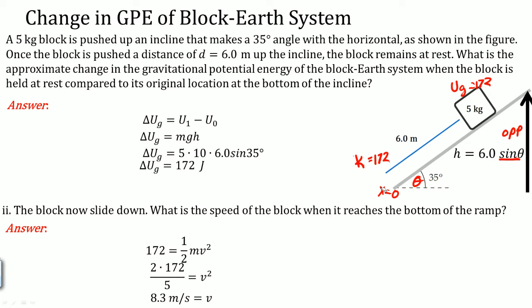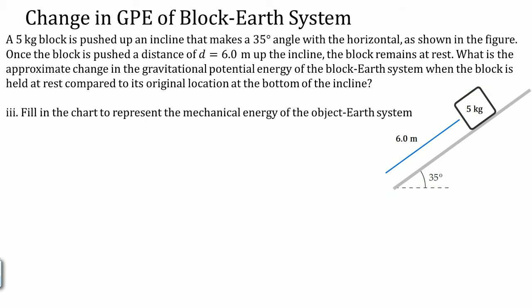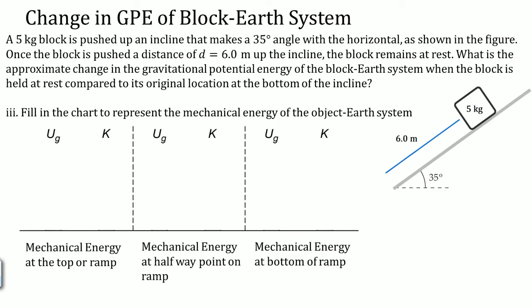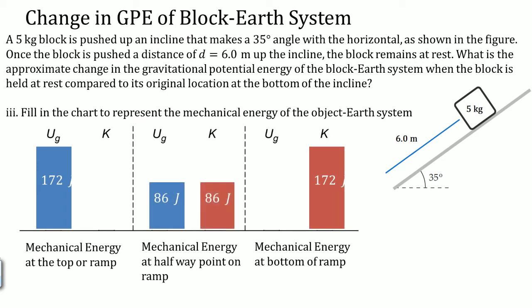This is the speed in which the block is when it's right down at the bottom. Notice all the potential was converted to kinetic at the bottom of the ramp. You want to fill in the chart to represent the mechanical energy of the block-earth system. Well at top of the ramp, then we have at the halfway point, then we have the bottom of the ramp. Well we saw that when it's on top of the ramp it is at 172 joules of energy and it's all potential. At the end it was all kinetic, 172 joules of energy.